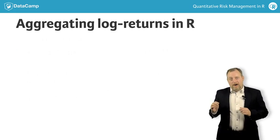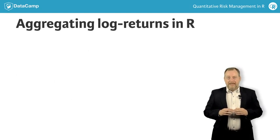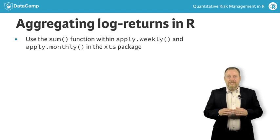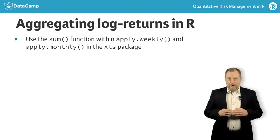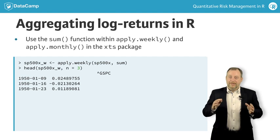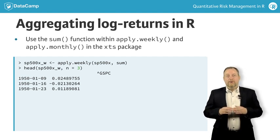To do this in R, you can use a set of functions in the XTS package with names like apply.weekly and apply.monthly. If the object SP500X is an XTS object containing daily log returns, you obtain weekly returns by applying the sum function within the apply.weekly function. Note how the returns now have date stamps that are seven days apart. Similarly, to get monthly returns, you apply the sum function within the apply.monthly function.